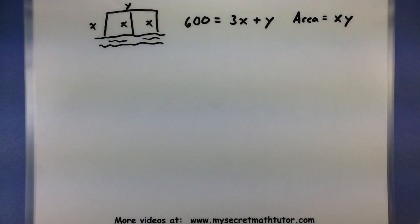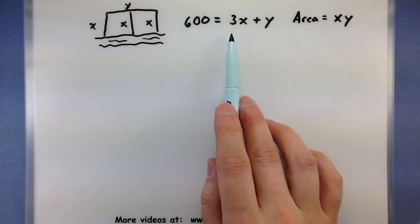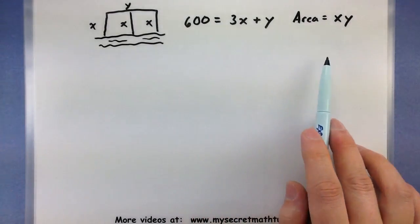Now if I can put these two things together, I can actually form a quadratic. Here's the idea. I have an x times y over here, and I have some x's and y's over here. We're going to solve this one for y and put it into the area.